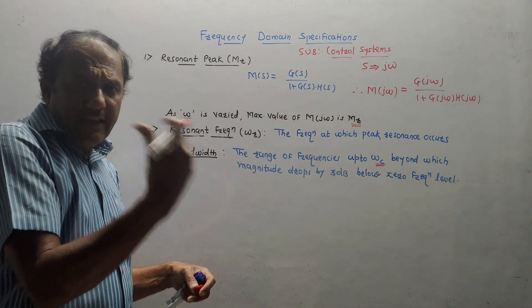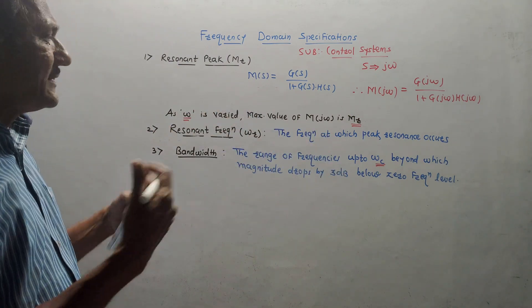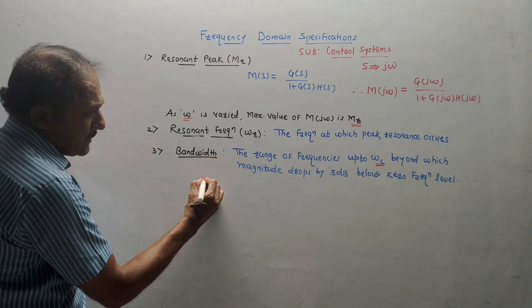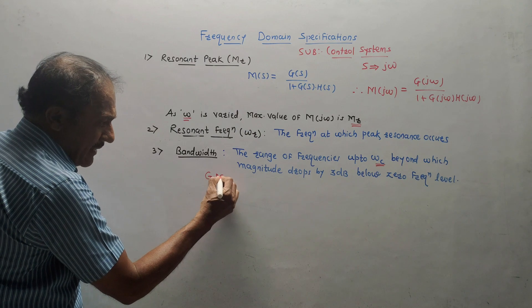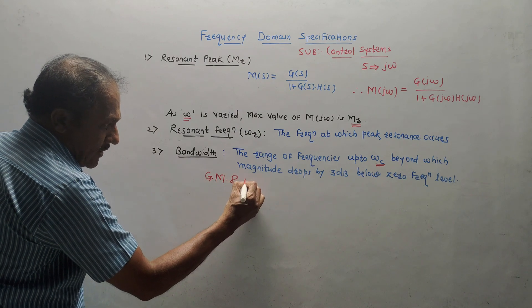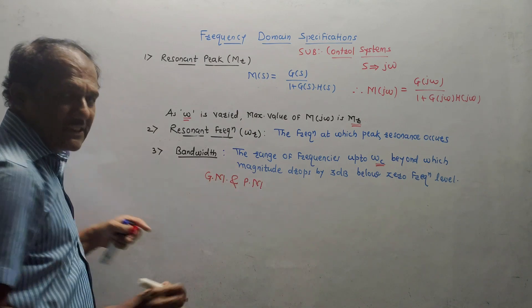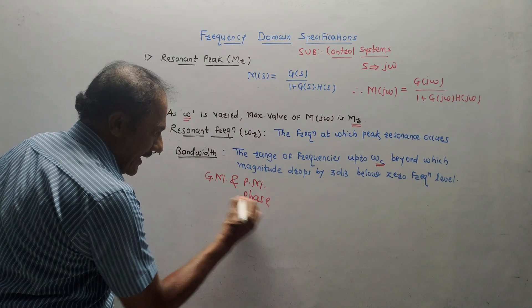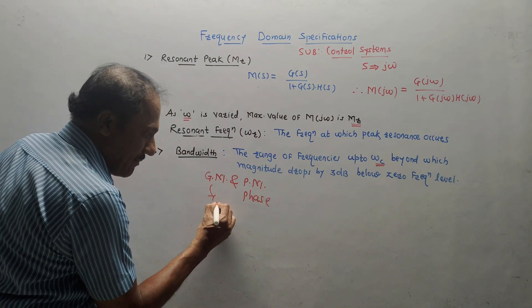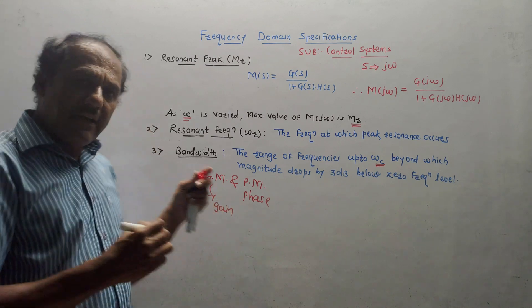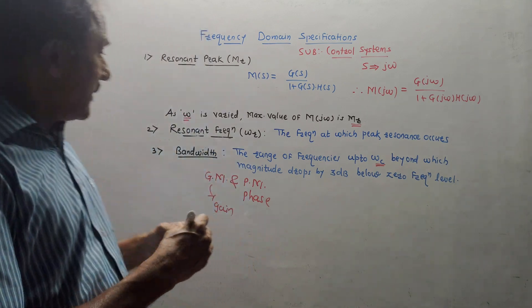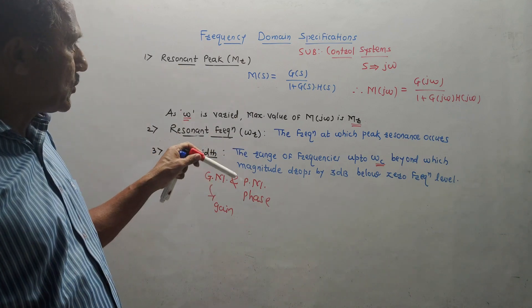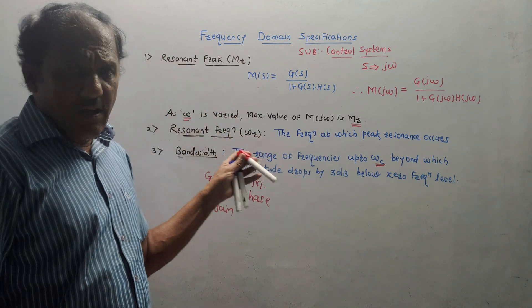This concept we will discuss in detail in the latter units — in polar plots, Nyquist plots, and so on. Apart from this, there are two more specifications: GM, that is gain margin, and PM, that is phase margin. All these terms are related to the Bode plot, which we will be studying in detail while discussing the Bode plots.